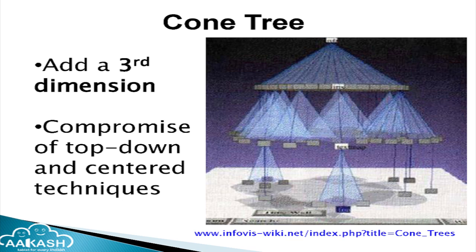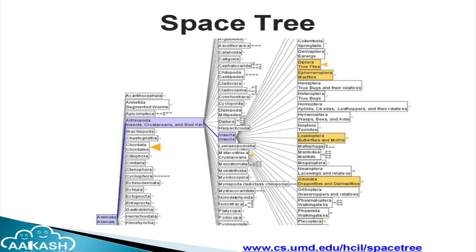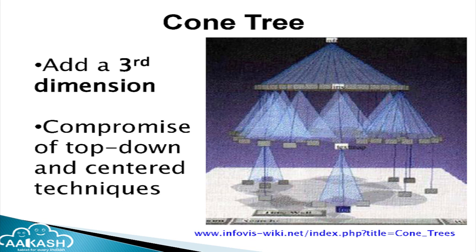There is a slight modification to the previous one called Cone Tree, proposed by Card and George. What they have done is add a third dimension to the previous structure. In the previous one you can see it is only a 2D structure, but here we can move the children of the node — the ones which are behind can come to the front. This helps in expressing and showing more data in comparison with the previous one. It actually uses the center technique and top-down approach simultaneously, giving a 3D kind of structure.